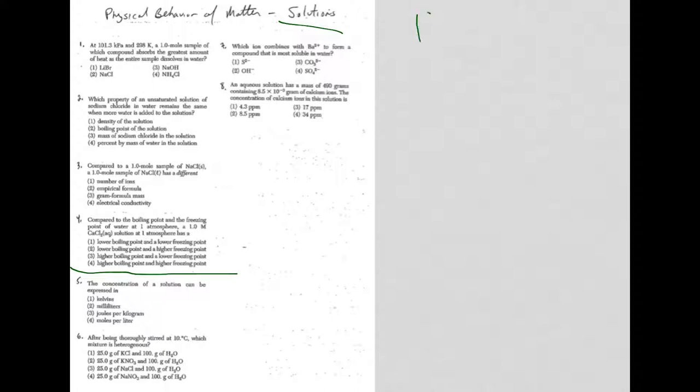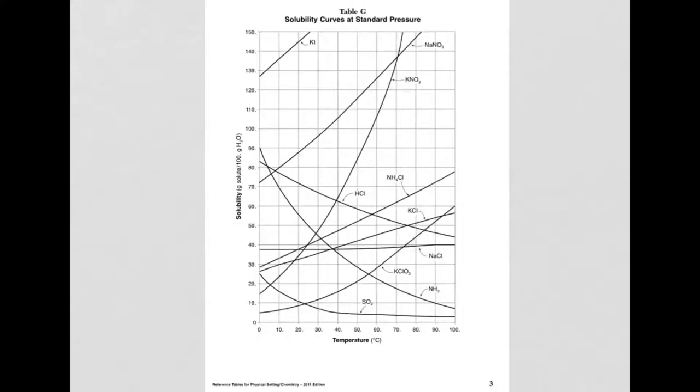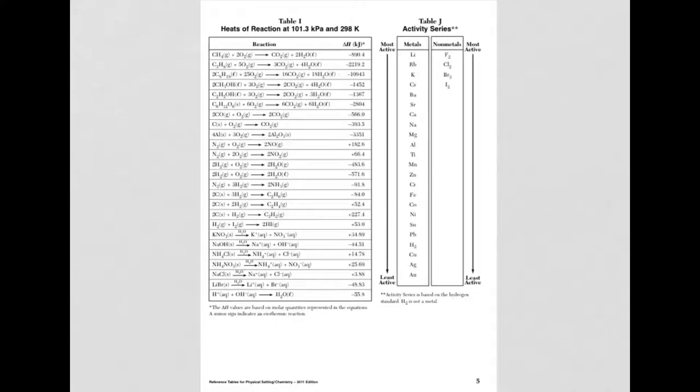And those tables include reference table F, G, I, and then T, of course, if we're dealing with solution concentration. So we're looking for something that has heat and has salts dissolving in water. And I go ahead and I flip to reference table I. And that's exactly what I'm looking for.